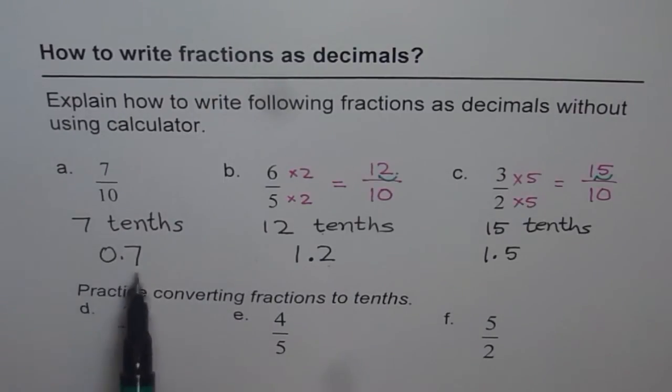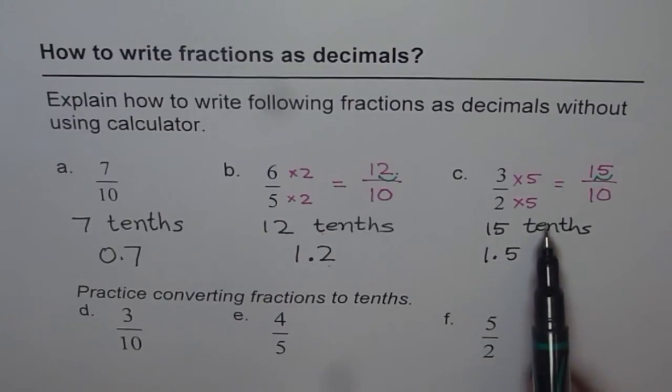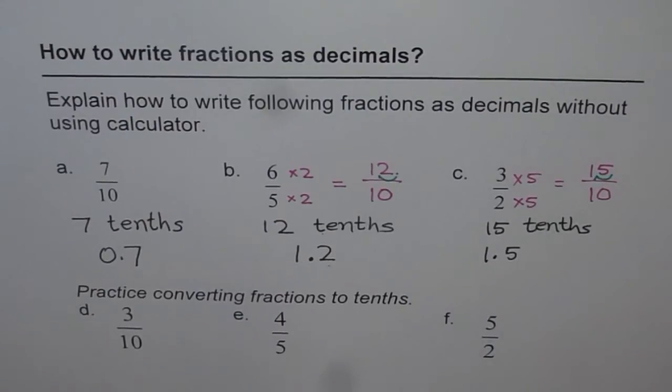3 tenths, you could write straight. 4 over 5, you have to convert them to tenths as we did here. 5 over 2 is similar to what we did. So try to follow this process and write down your answers. Thank you.